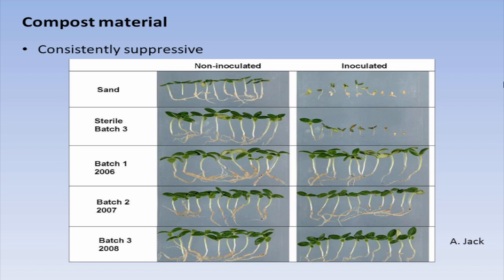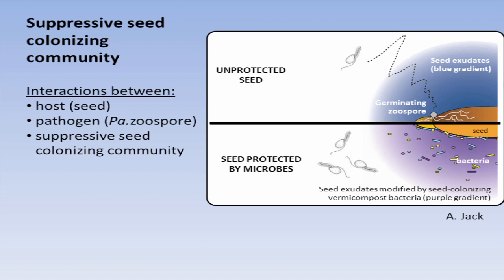Over several years, vermicompost was consistently suppressive when challenged in bioassays with Pythium. When you sterilize the vermicompost, you have disease — so it's microbially induced suppression. Non-inoculated, non-sterile material showed no disease, confirming microbes are playing a role. Unprotected seed, with no microbes present, attracts the zoospore chemotactically, like a shark to blood. But the seed exudate gradient coming from the seed is altered, and the pathogen can no longer detect the seed — some previous research by Allison Jack.